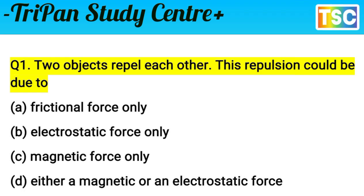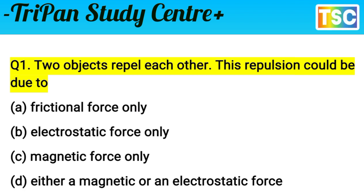The first question: two objects repel each other. This repulsion could be due to: A) frictional force only, B) electrostatic force only, C) magnetic force only, D) either a magnetic or an electrostatic force.